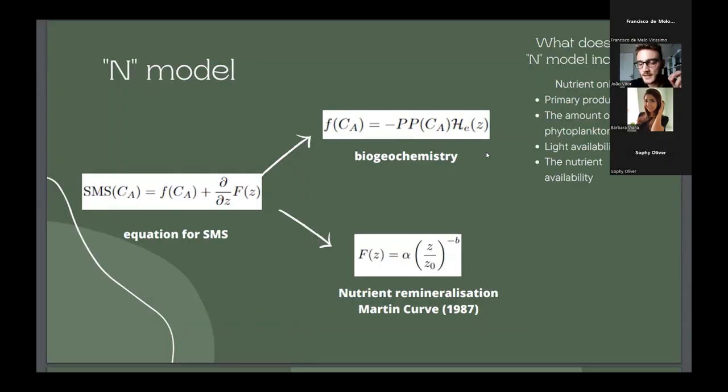the amount of phytoplankton, the light availability, the nutrient availability multiplied by a Heaviside function. Here we have a function that depends on the concentration. And, as we see earlier, we have the upper F,